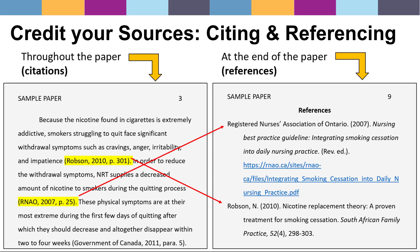Let's look closely at how to credit your sources using citing and referencing. On the left-hand side you'll see citations found throughout the paper. On the right-hand side, you'll see an example of a references list at the end of the paper. When writing a research paper, you must always insert in-text citations within the body of the paper every time you take information from a source and utilize it, even if you're paraphrasing the information into your own words.